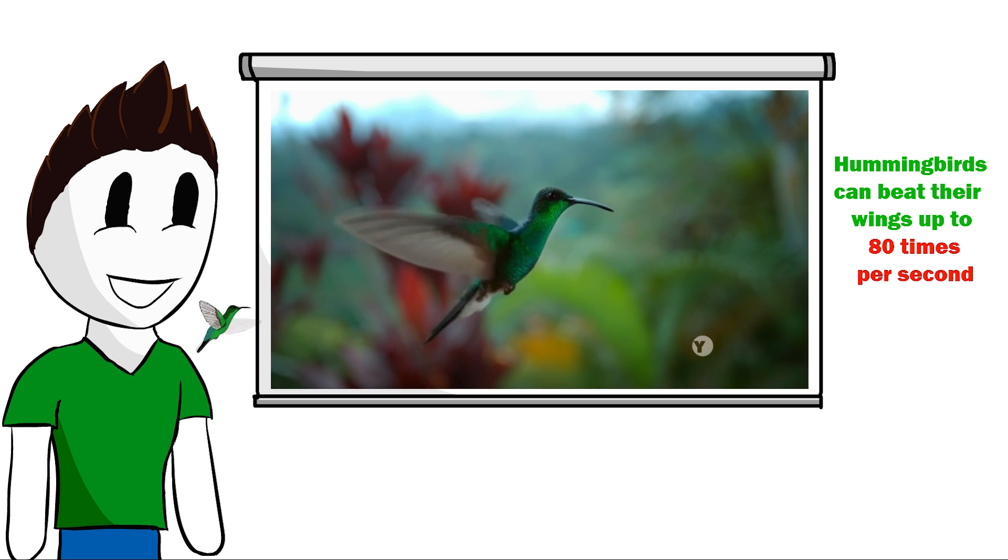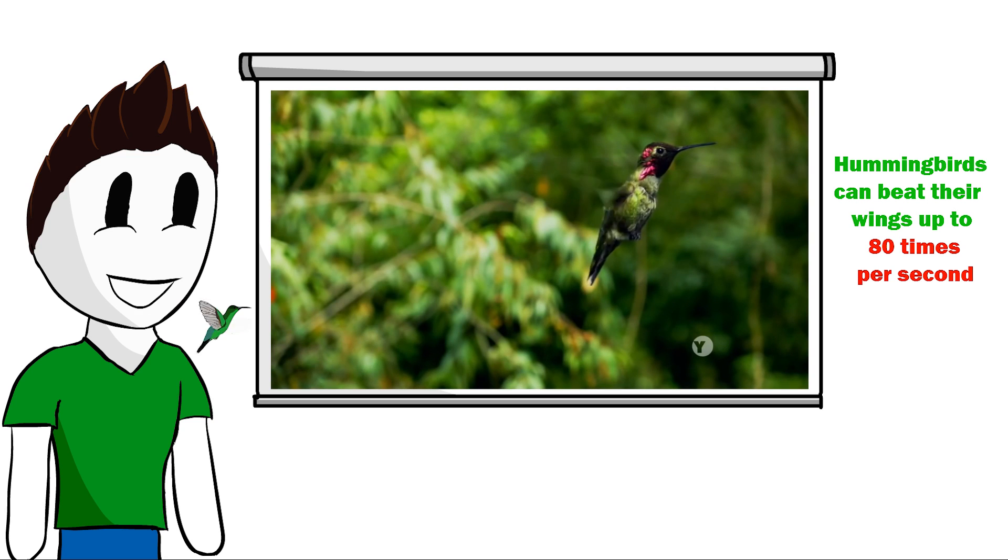For hovering, hummingbirds have to beat their wings up to 80 times per second. Not only can they hover in air, but unlike other birds, they can fly in all directions: forward, backward, up, down.